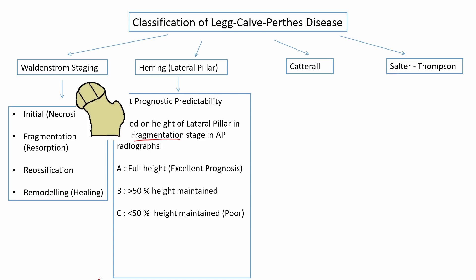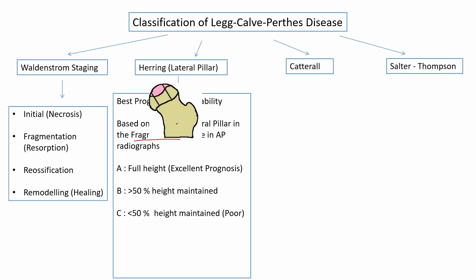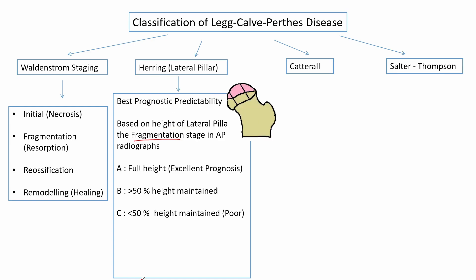The femoral head is divided into three pillars: the medial pillar, the central pillar, and the lateral pillar. In type A, the lateral pillar has full height. In type B, the lateral pillar has more than 50% of its height maintained. In type C, it has less than 50% of its height maintained.